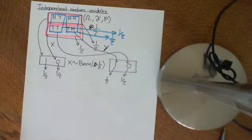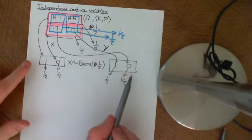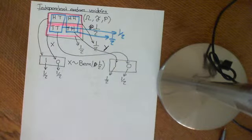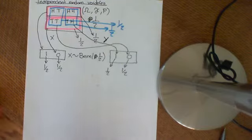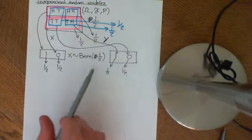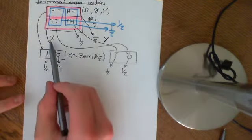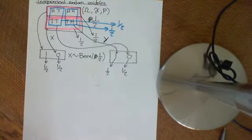So we have two random variables on a single probability space — that's a really important concept. As far as these two are concerned, they are utterly identical probability spaces, so we have what would be called identically distributed probability spaces. The terminology is that these random variables are identically distributed.